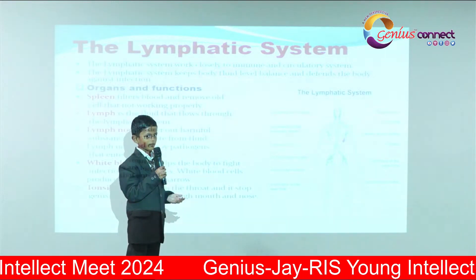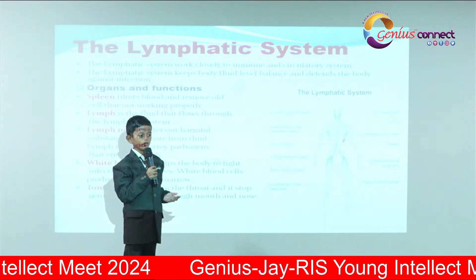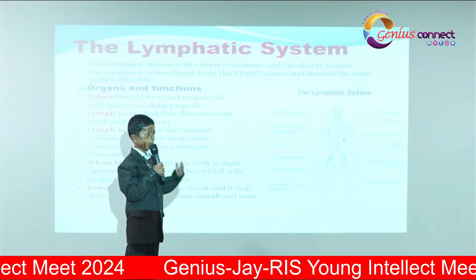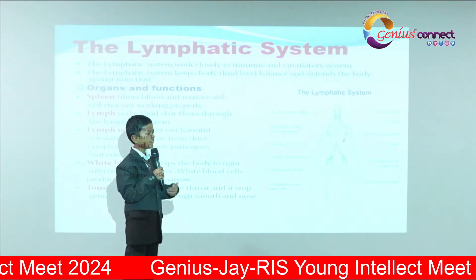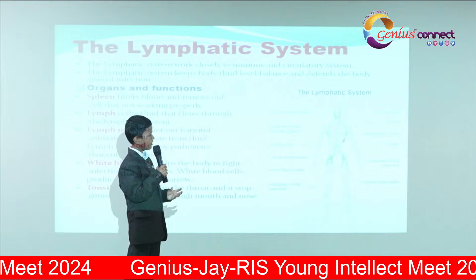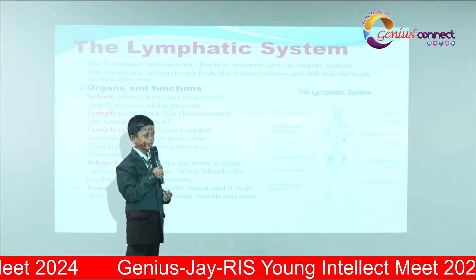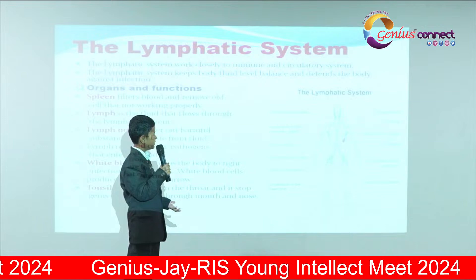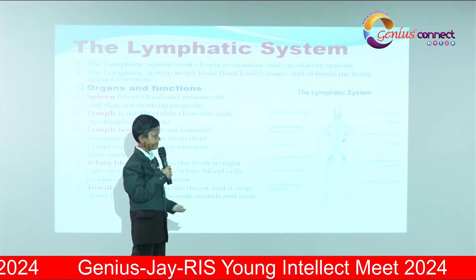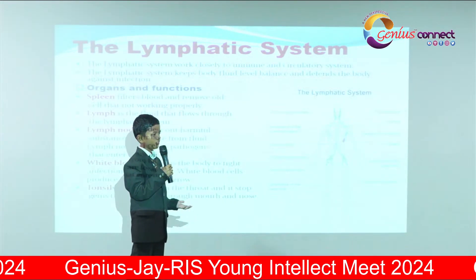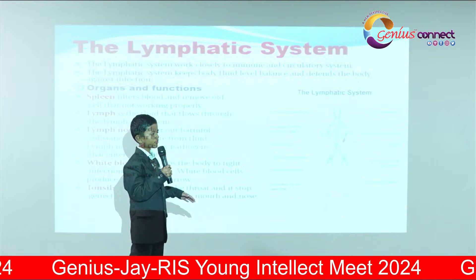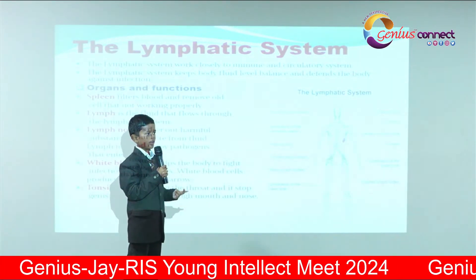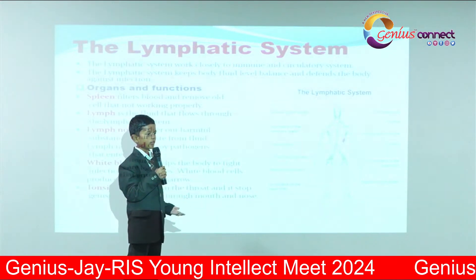The lymphatic system works closely with the immune and circulatory system. It keeps body fluid levels balanced and defends the body against infection. The spleen filters the blood and removes cells that are not working properly. Lymph is a fluid which flows in the lymphatic system. The lymph nodes filter out harmful substances and cell changes that could make us ill.